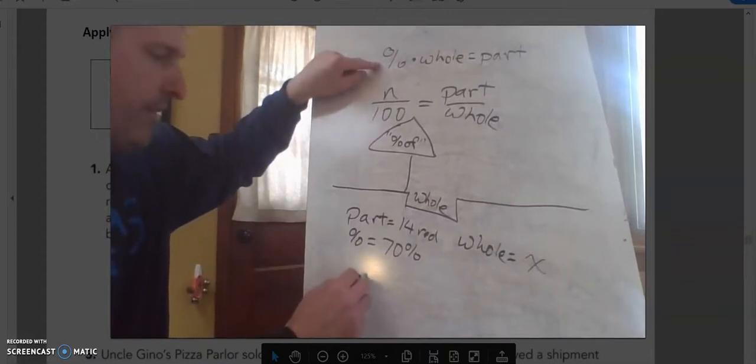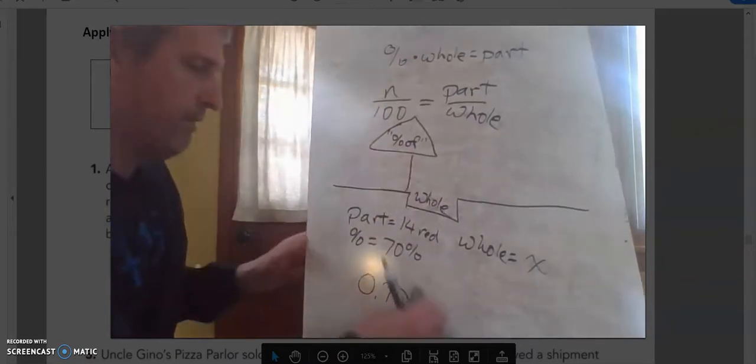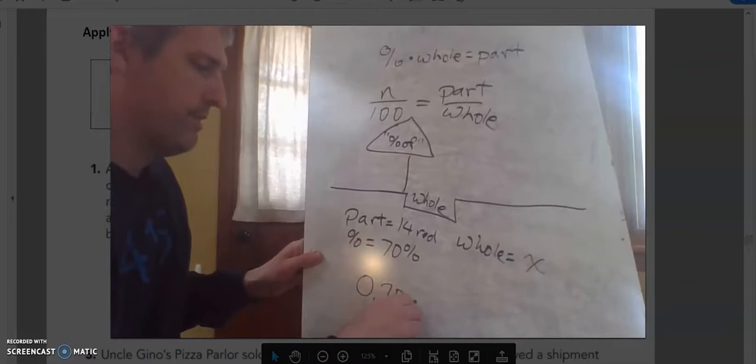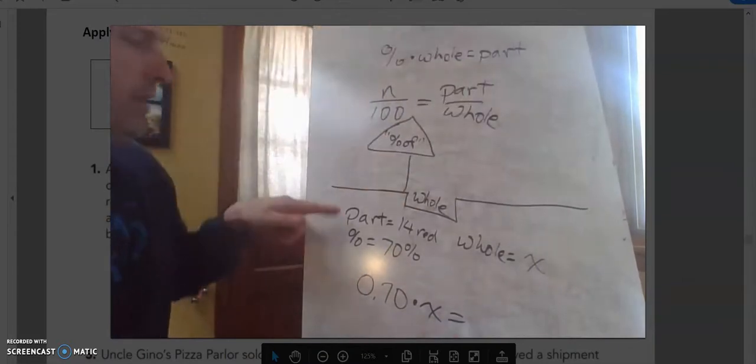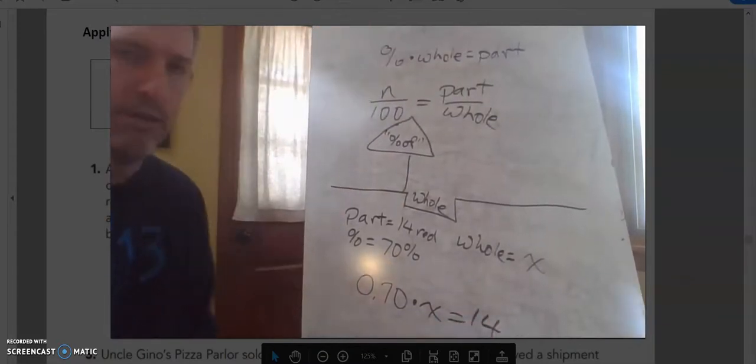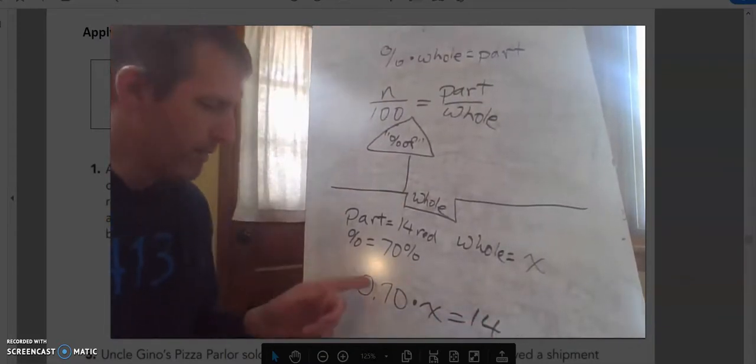I'm going to use this equation, percent times whole equals part, to figure out what the whole is. So I know my percent. I'm going to write that here. But I'm going to write it as a decimal. So 0.70 times the whole, which I don't know.